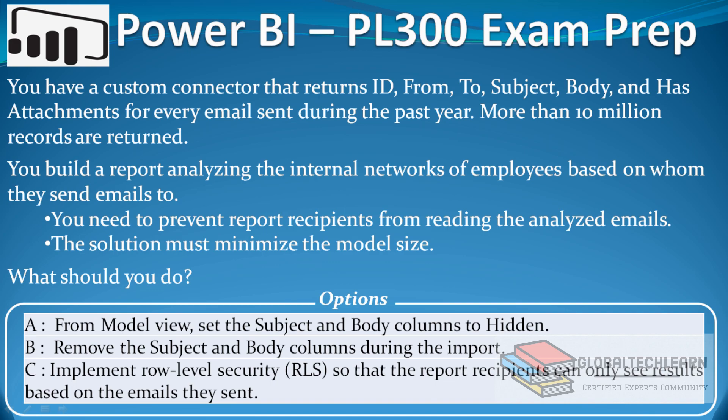The question is: you have a custom connector that returns id, from, to, subject, body, and has_attachments fields for every email sent during the past year. More than 10 million records are returned. A report analyzing the internal networks of employees based on whom they send email to. You need to prevent report recipients from reading the analyzed emails. The solution must minimize the model size. What should you do?